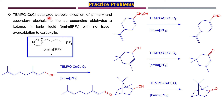TEMPO can be coupled with CuCl and under aerobic conditions, primary and secondary alcohols can be converted to their corresponding aldehydes or ketones using an ionic liquid as solvent. Interestingly, there is no over-oxidation to carboxylic acid, which is an important advantage. So TEMPO, CuCl, oxygen, and the ionic liquid — essentially acting as a phase transfer catalyst — work together for this transformation.